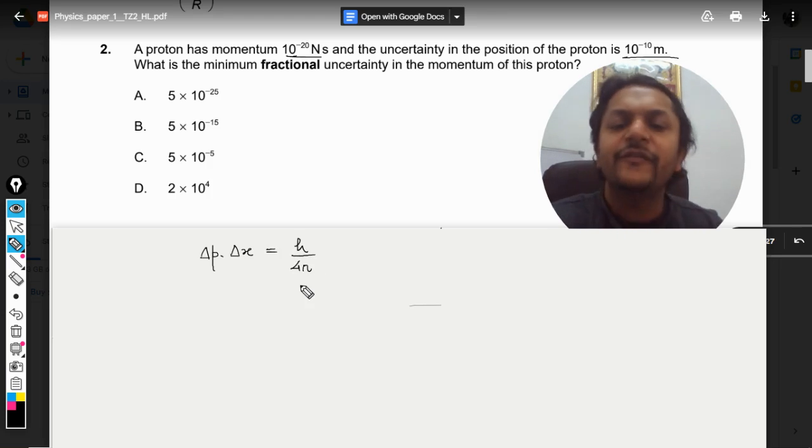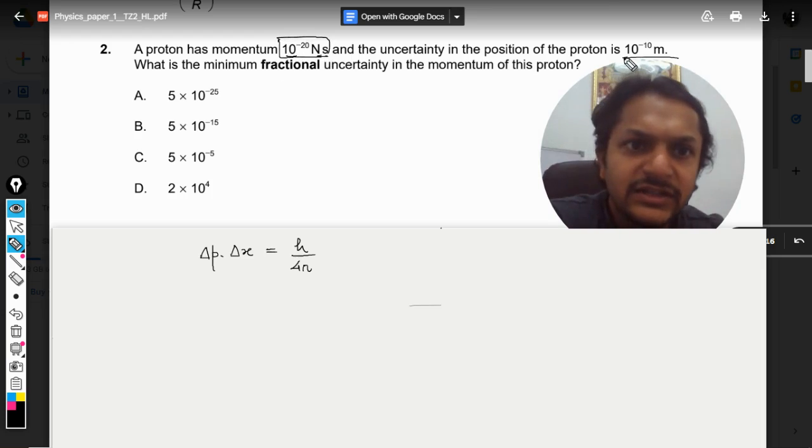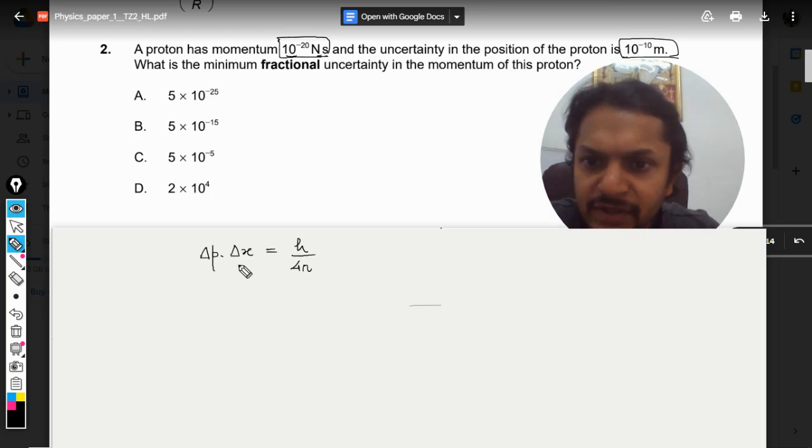And now what are the given things? The momentum is given to us but the uncertainty in momentum is not given. The uncertainty in position is given.